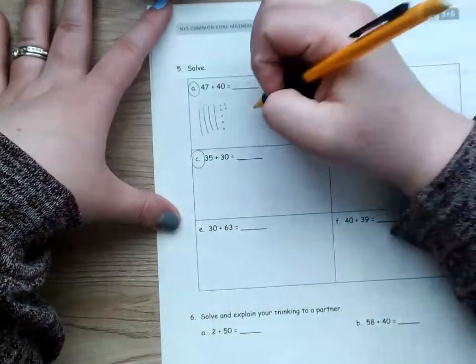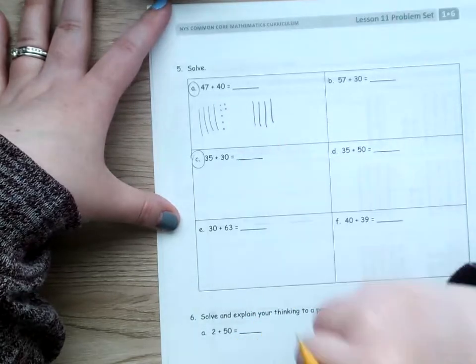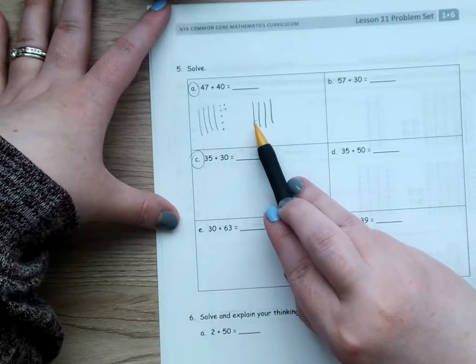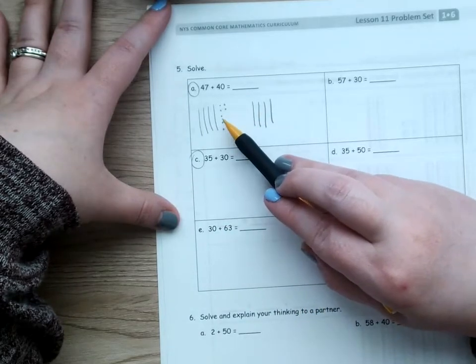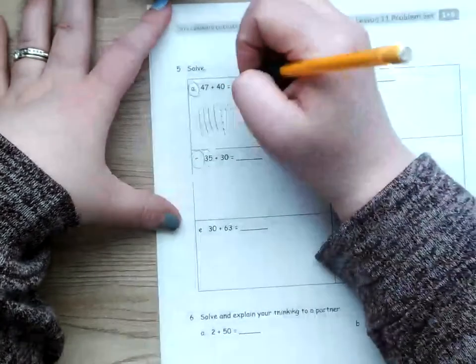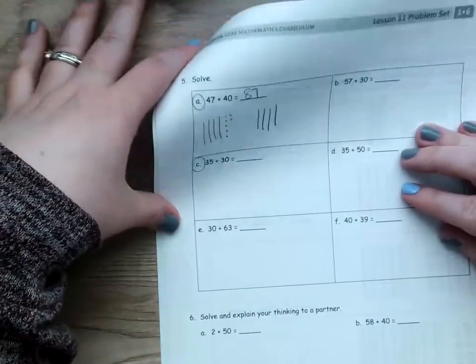Over here, I'm going to show 40 with four tens sticks. Okay? And then, I can count them up. So, I've got 10, 20, 30, 40, 50, 60, 70, 80, 81, 82, 83, 84, 85, 86, 87. Okay? Just like that, I've solved the problem.